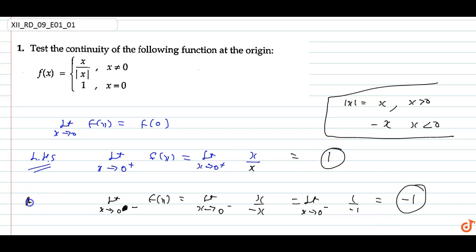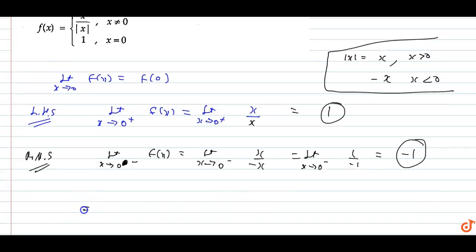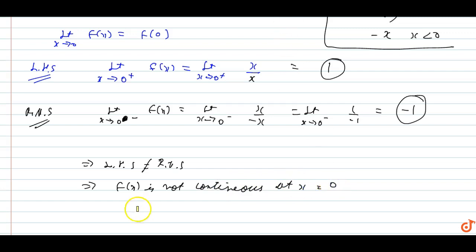So this is the RHS. This implies LHS is not equal to RHS. This means f(x) is not continuous at x equals to 0.